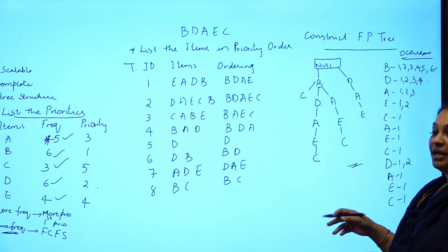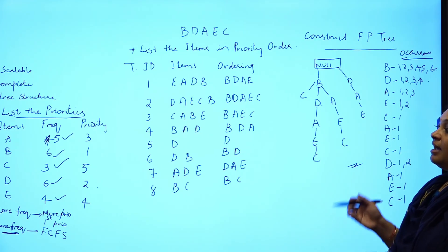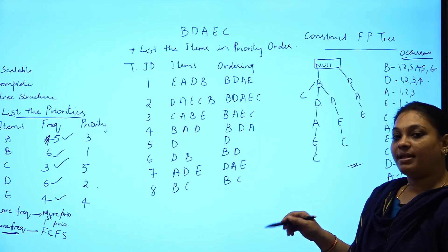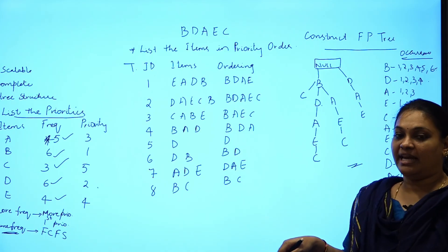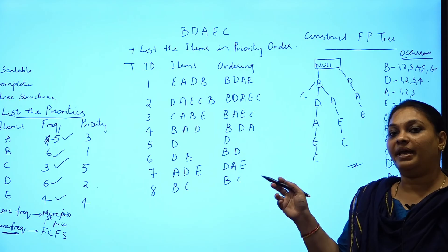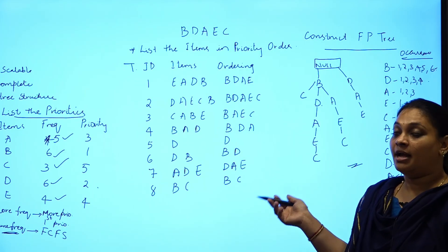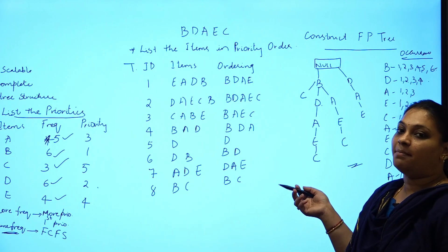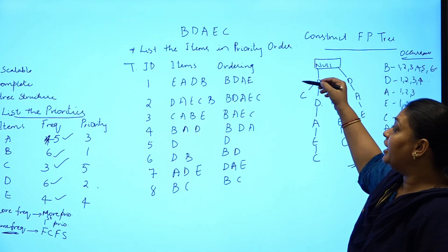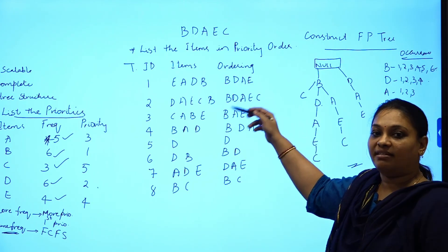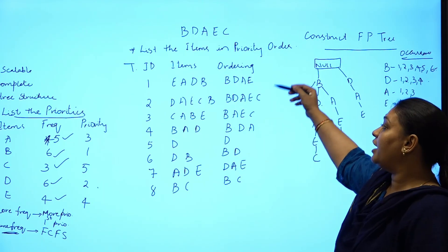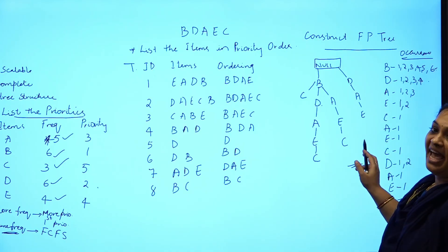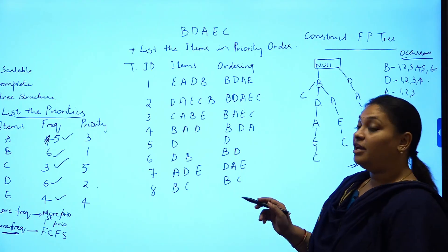In summary, the FP Growth Algorithm works as follows: first, list the items and calculate their frequencies; then assign priorities based on frequency, using FCFS for ties; next, reorder each transaction's items by priority order; finally, construct the FP Tree from these ordered transactions. This is the complete FP Growth Algorithm process.